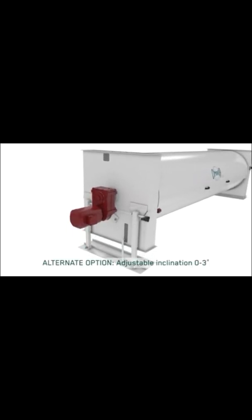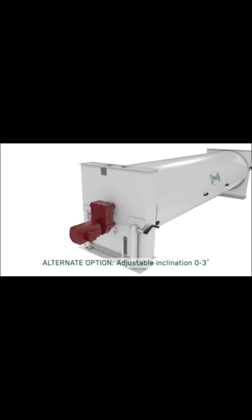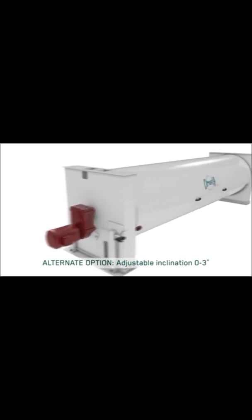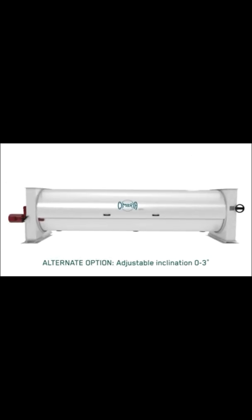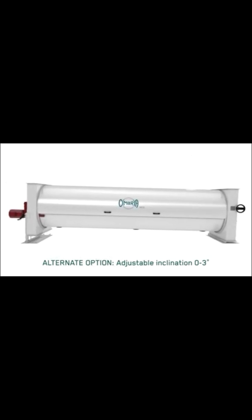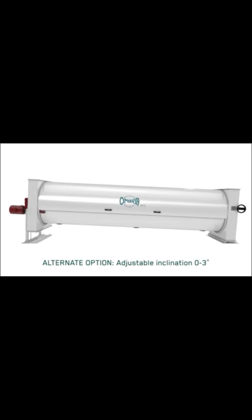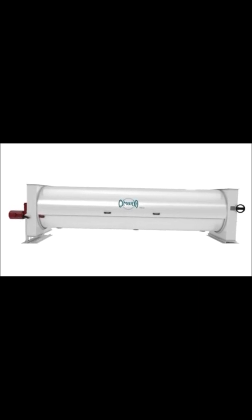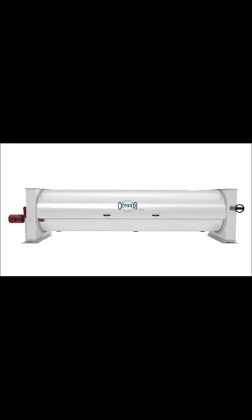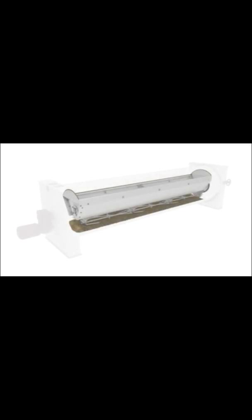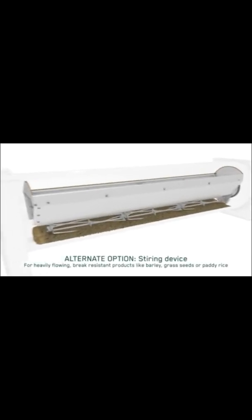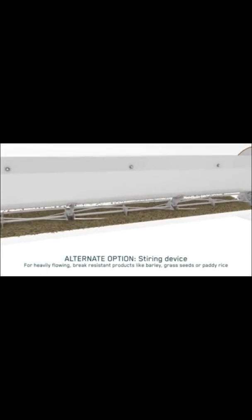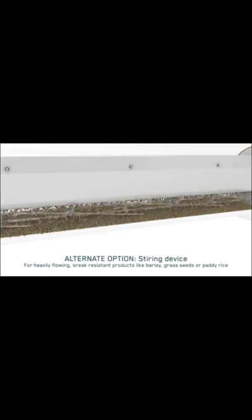This is the inclination adjustment, ranging from 0 to 3 degrees. Inclination can be provided manually or automatically. This is the string device for heavy-flowing, break-resistant products like barley, grass seeds, or similar materials.